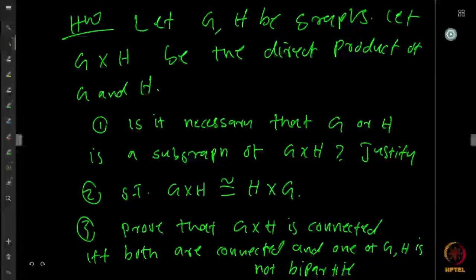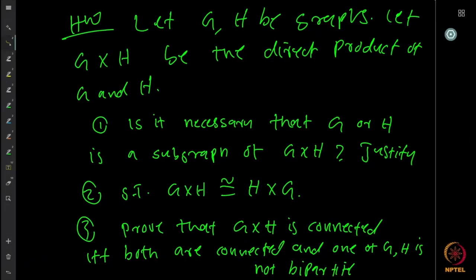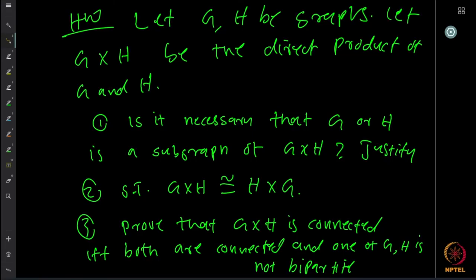Here are some homework questions for the direct product G cross H. First: is it necessary that G or H is a subgraph of the product? Give a justification whether yes or no. Second: show that G cross H is isomorphic to H cross G. Third: prove that the direct product is connected if and only if both components are connected and at least one of them is not bipartite — if both are bipartite, the product is not connected.